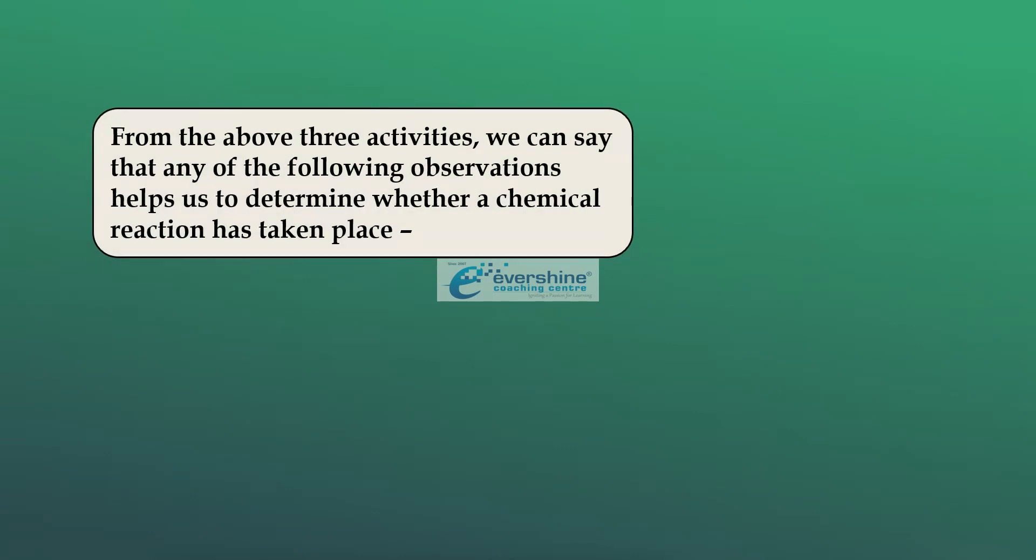Now, from these all three activities, we can say that, what did we observe? Yes, we have observed that there is a chemical reaction has taken place. Now, this is one of the very important questions for your examination point of view. The possible question will be in such a way. How do you determine whether a chemical reaction has taken place? Please, take down this question. How do you determine whether a chemical reaction has taken place? Or, name the indicators which indicates or which determines a chemical reaction. Name the indicators which determines whether a chemical reaction has taken place.